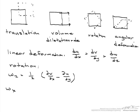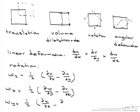If it's around the x axis, it's 1 half dw dy minus dw dx.